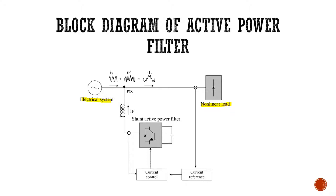The current reference is given to a current control unit. Most commonly, we are using a PWM control or a hysteresis current control for this type. This current control unit gives the pulse that is required for the shunt active power filter, so that the shunt active power filter feeds back the filter current to the point of common coupling. This filter current IF compensates the harmonic present in the grid and makes the harmonic levels in the grid system under control, so that a perfect sinusoidal wave with maximum power quality is present in the system with near-zero harmonics. This is the working principle of a shunt active power filter.